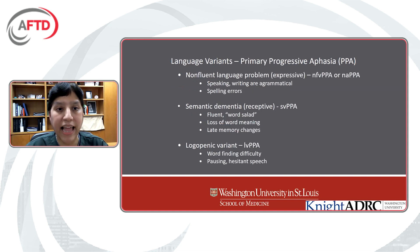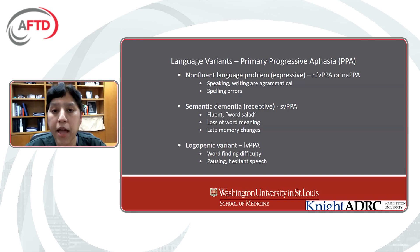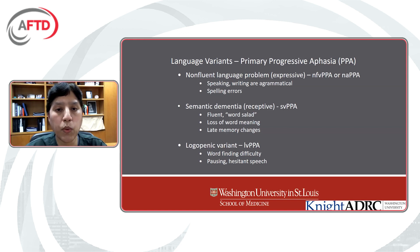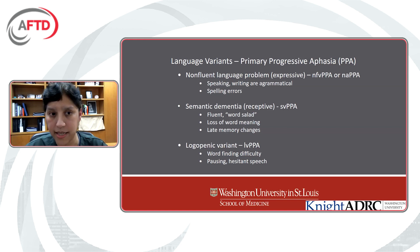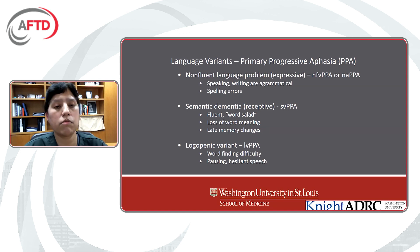Moving on to the language variants — primary progressive aphasia, or PPA. Aphasia has to do with language dysfunction — primarily a progressive issue with language. There are three different flavors of language variants. The first is non-fluent language problems: you know what you want to say but have great difficulties speaking and writing clearly. Things you're trying to communicate are agrammatical — connective words are missing. So instead of 'the boy is kicking the ball,' you get 'ball, boy, kick.' There may be spelling errors, like 'square' being spelled S-W-A-R-E.